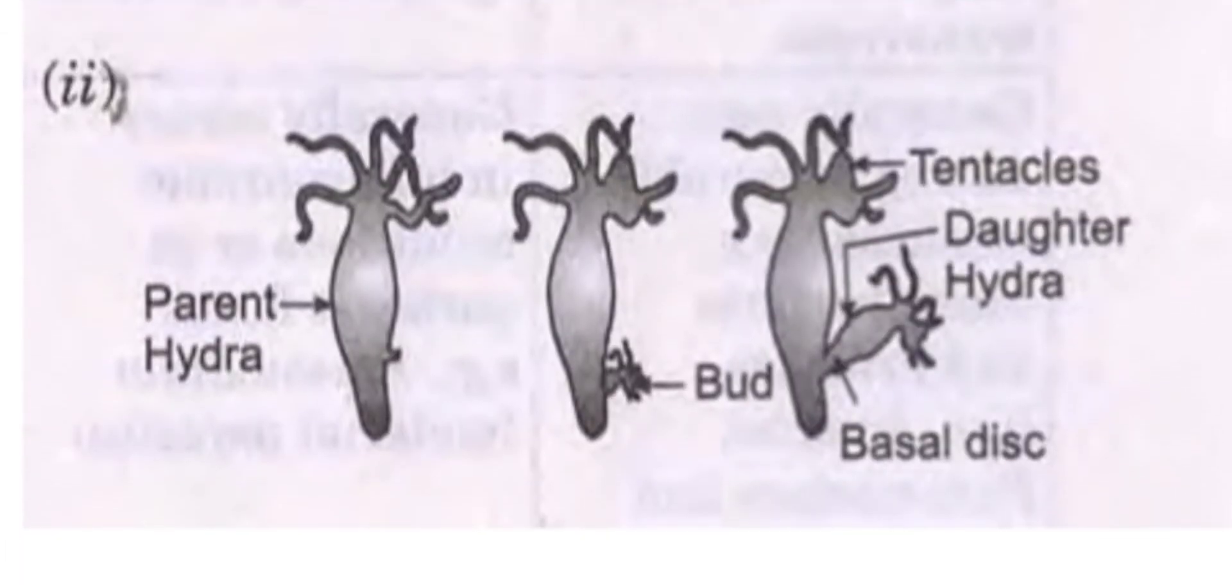Here is budding in hydra. First you can show the parent hydra and how a small bud starts growing and how it develops and how the daughter hydra grows fully. Here you can also label the tentacles and basal disc also. And you can show the detached daughter hydra also.